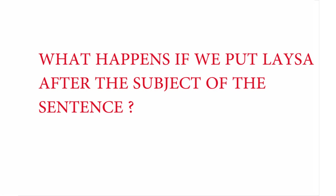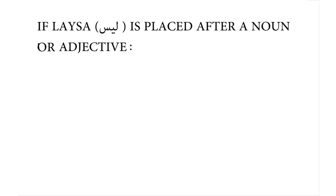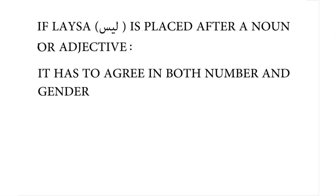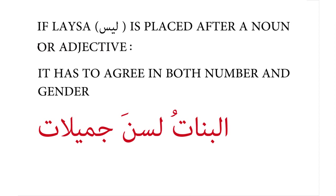Now let's examine what happens if we put leysa after the subject of the sentence. If leysa comes after the subject, it has to agree in both number and gender. For example: elbinatu lessna jamilatin. Instead of using leysit as we did when it came first, now we have to use lesna, conjugated for both feminine gender and plural number.